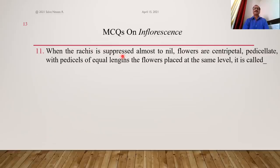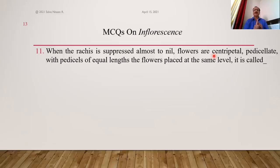When the rachis is suppressed almost to nil — very, very small — it looks as if all flowers (younger and older) are being produced from the same single point. Flowers are centripetal: the acropetal succession has changed to centripetal because there is no more length to the rachis. Older flowers are at the peripheral region and younger flowers are at the central region.